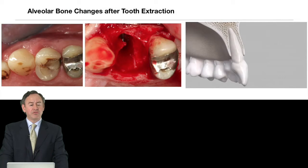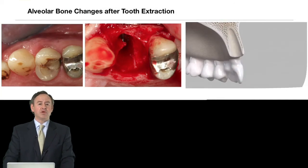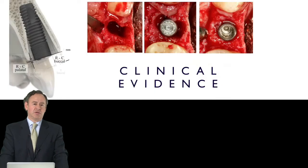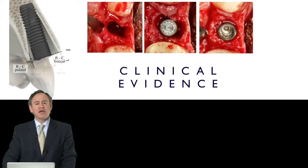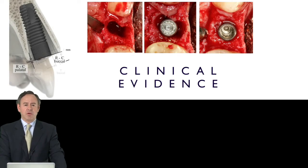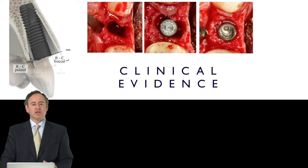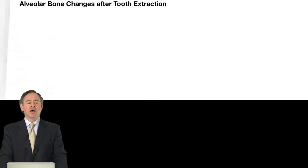My name is Mariano Sanz and I will try to address today what are the critical factors involved in our decision to place an implant whenever we do a dental extraction. We understand that whenever we do a dental extraction, there are going to be important changes both buccolingually and apico-coronally in the crest. We need to understand what is the critical clinical evidence that if we place an implant immediately upon extraction, we are going to have predictive good aesthetic results in relation to the position of the bone and soft tissues.